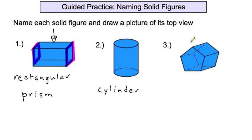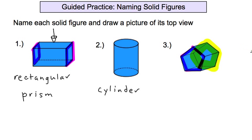Number three has a pentagon here — one, two, three, four, five. And then a pentagon on that back side. So it has two pentagons that are the same size, and so we call that a pentagonal prism.